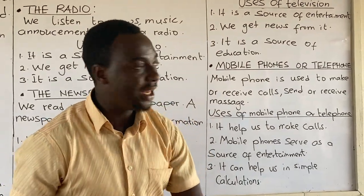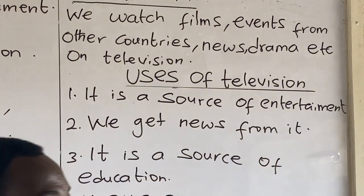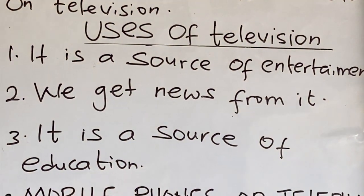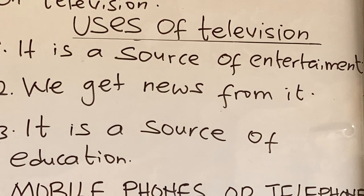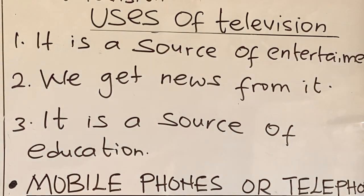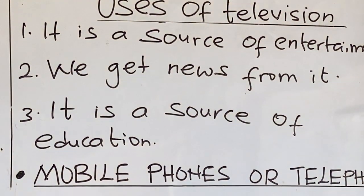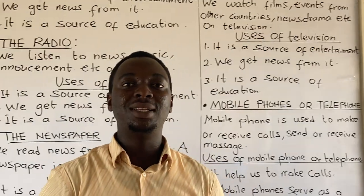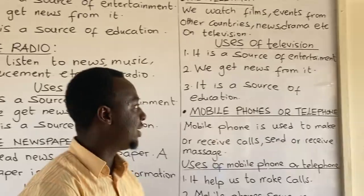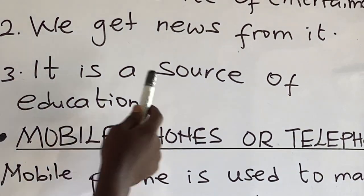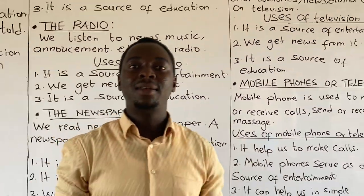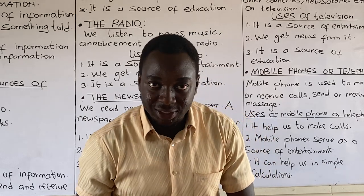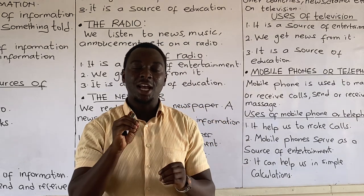Let's look at the uses of the television. One: it is a source of entertainment, because we listen to music and dance, and watch comedies on the television which make us laugh. Two: we get news from it — we watch the 6 o'clock news, the 12 o'clock news, and other news on television. Three: it is a source of education. A lot of online teachings and tutorials are watched on the television.